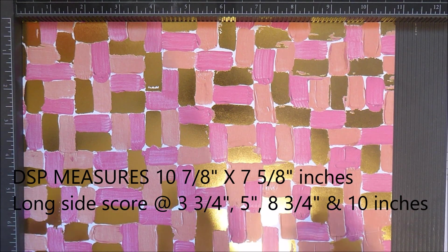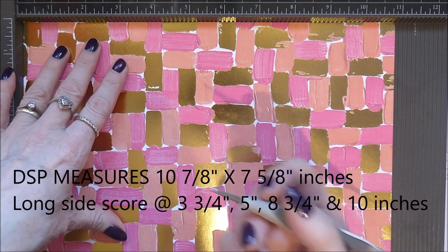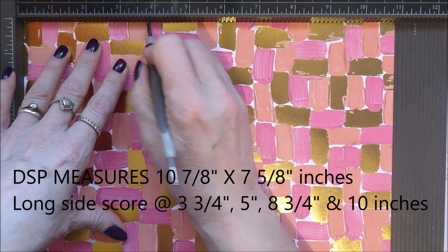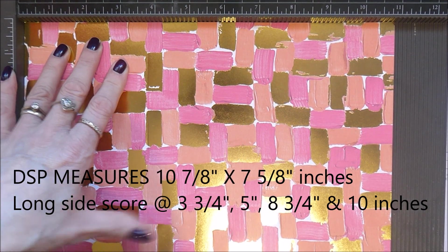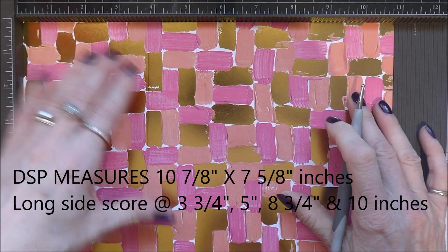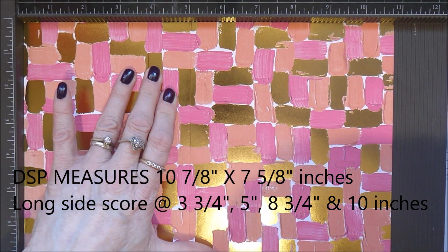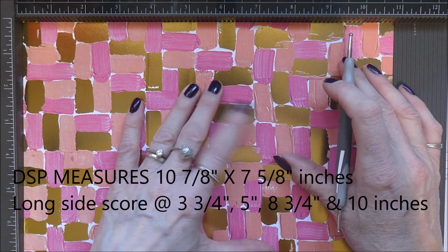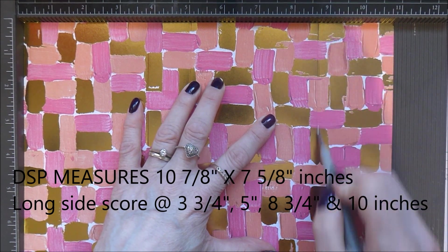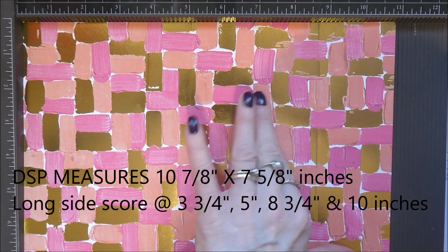And so on the long side you're going to start off by scoring at three and three quarters. Then you're going to score at five inches. Then you're scoring eight and three quarters. And at ten.